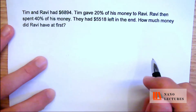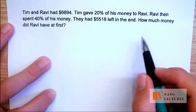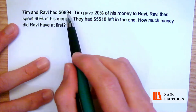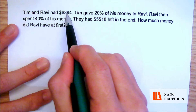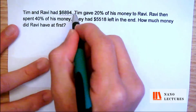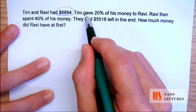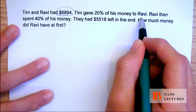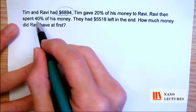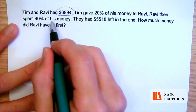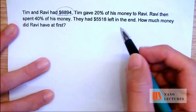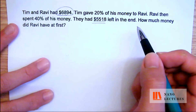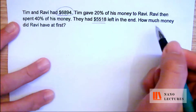Let's go ahead and draw the model for this one. This is actually a before and after problem — before they had this amount, after Tim gave 20% to Ravi, after which Ravi spent 40% of his new amount of money, they had this amount left. So it's a before and after.